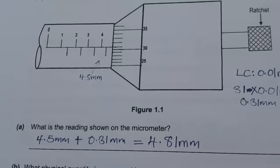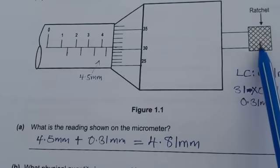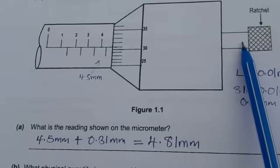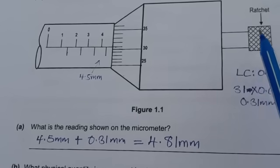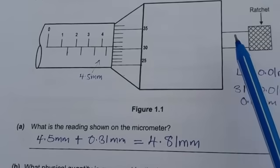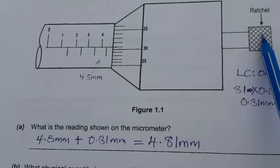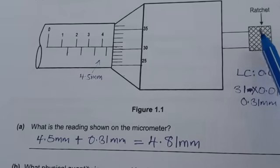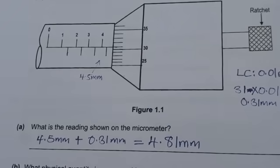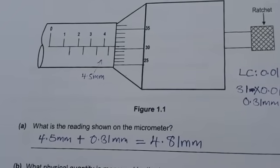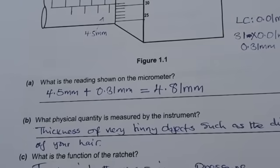This instrument is very delicate, very fragile. If you apply too much pressure when taking your measurement, you may damage the instrument. So this ratchet is used to maintain the measuring pressure. There is a certain sound that the ratchet makes to say you are not supposed to go over this pressure that you are applying on the instrument.